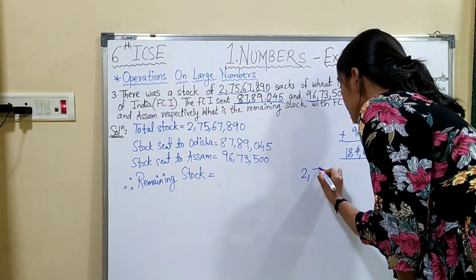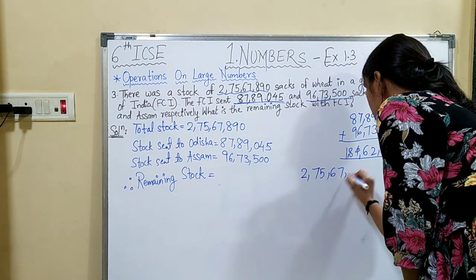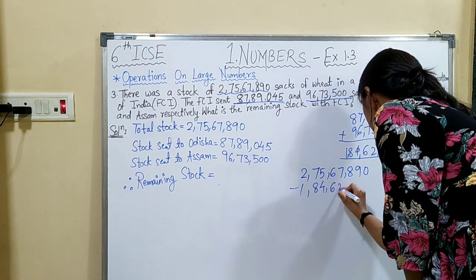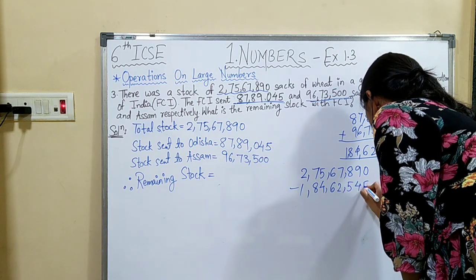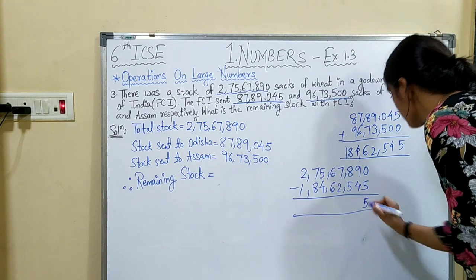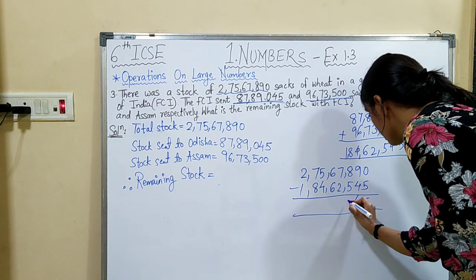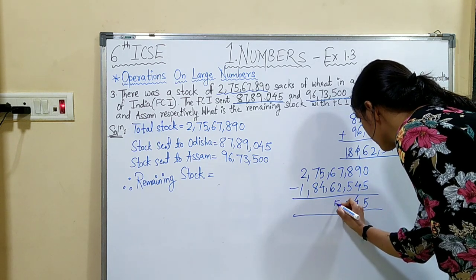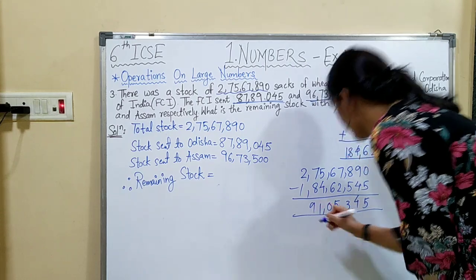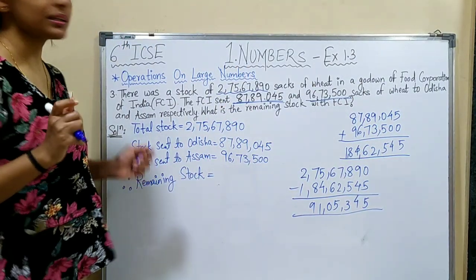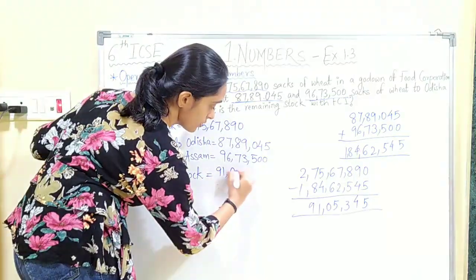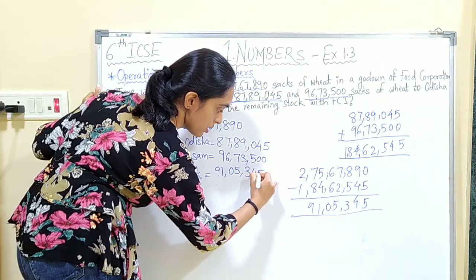Now we subtract: 2,75,67,890 minus 1,84,62,545. Working through the subtraction, the remaining stock left with FCI is 91,05,345.